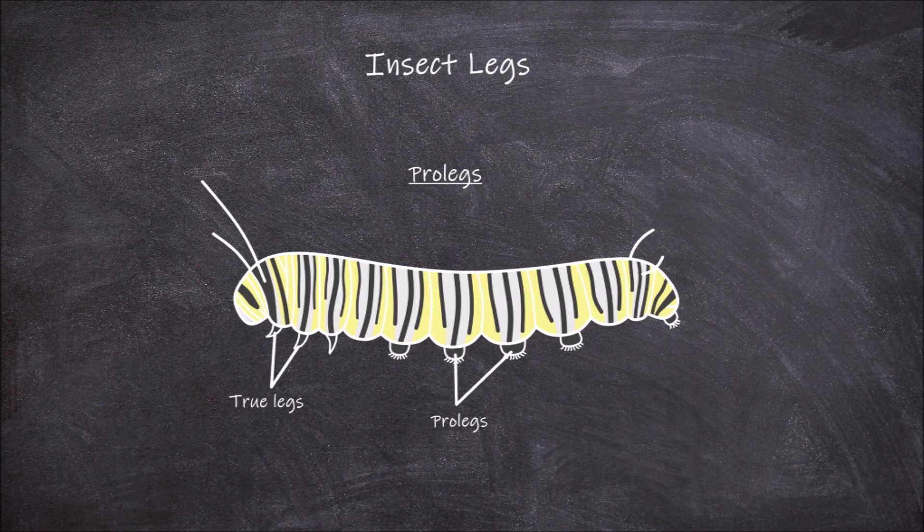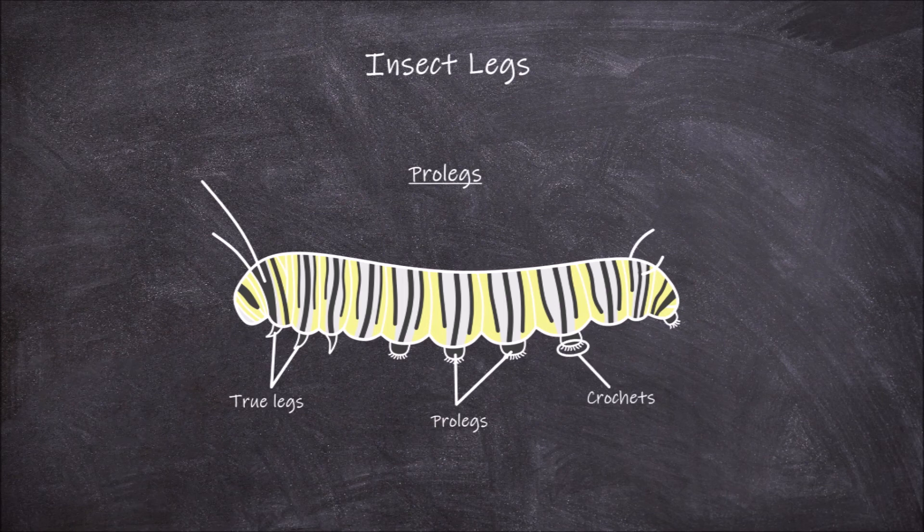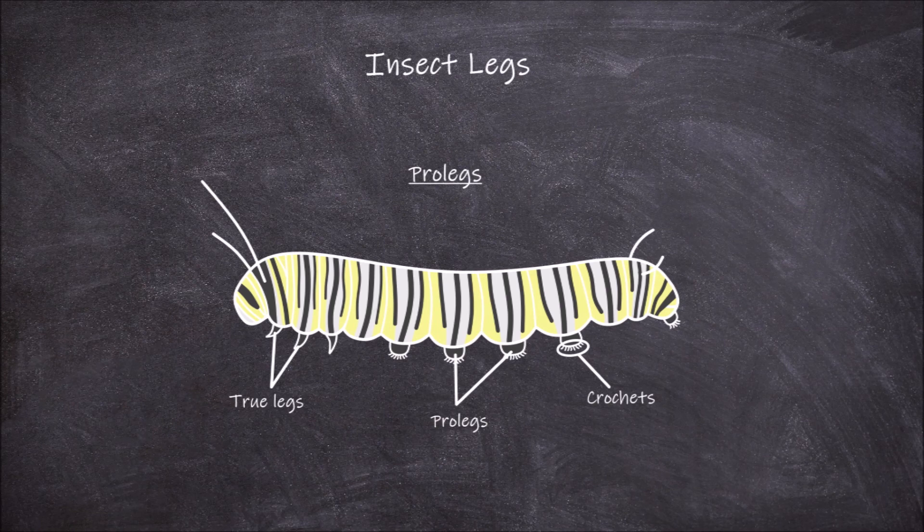They are short, lobe-like and fleshy and are found in pairs on some of the abdominal segments. At the end of each of these prolegs are small hooks called crochets that function in allowing the larval form to grip onto surfaces.